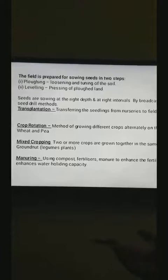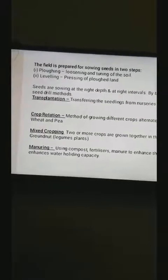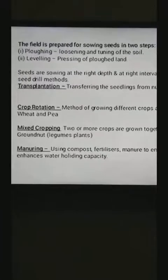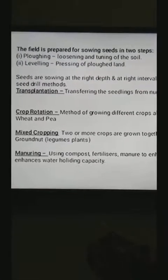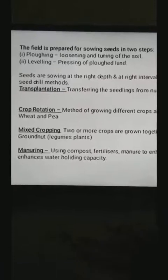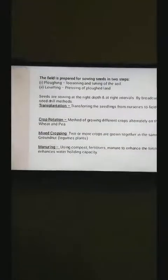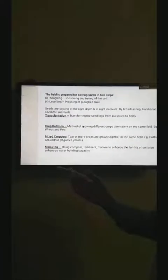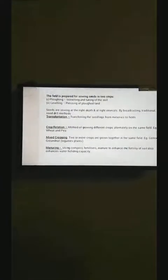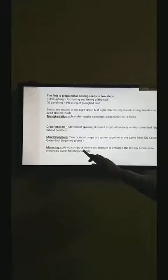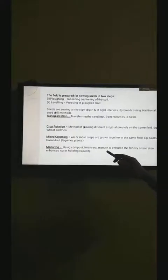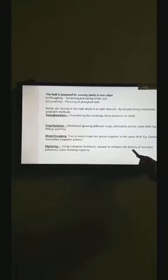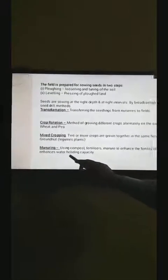The another step of the agriculture practices is manuring. Manure is an organic compound which is obtained by the decomposition of plants and animal wastes. Microbes play a very important role in decomposing. The using of compost fertilizers and manures to increase the fertility of soil is called manuring. It is also very important to improve the water holding capacity of the soil.